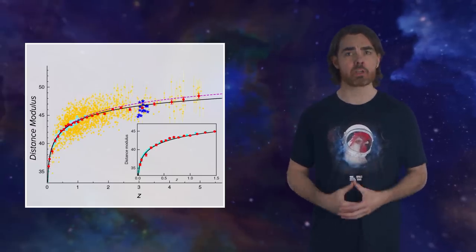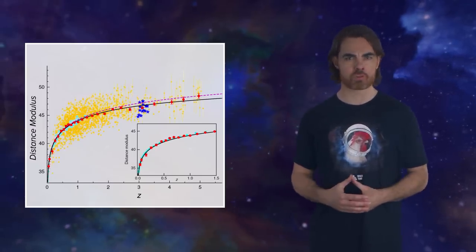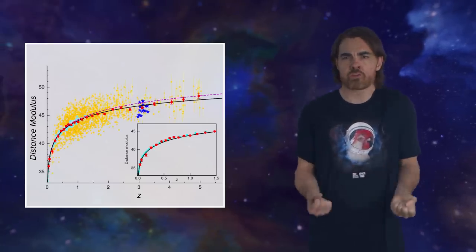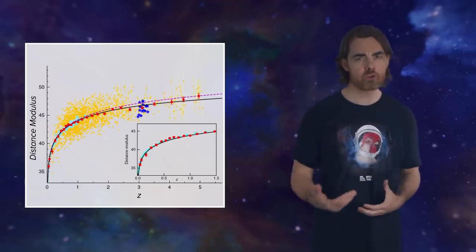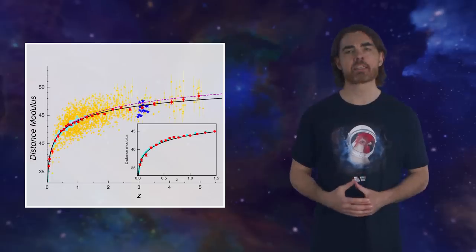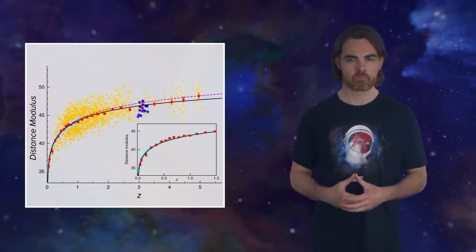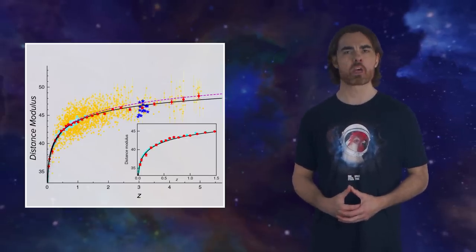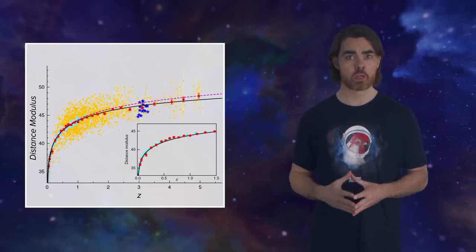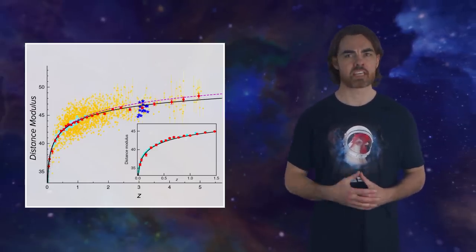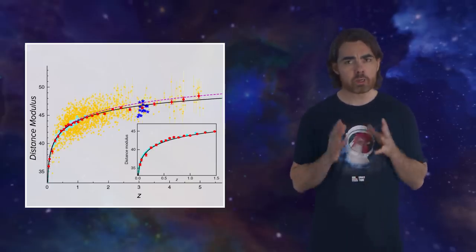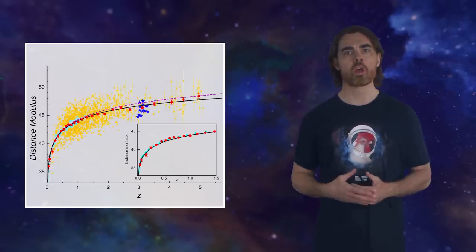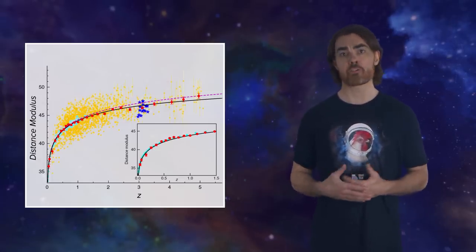The red points are consistently below the dashed line for large distances and redshifts. That means the light from these quasars appears more stretched out — more redshifted on average — than it should be given their distance and textbook Lambda CDM cosmology. The black line is the model of the expansion history in which dark energy is not constant, but instead is getting stronger as the universe ages, and it fits the data pretty well. Very roughly speaking, if the expansion of the universe is accelerating even more than we thought, that could explain the extra stretching of the light from these distant quasars.